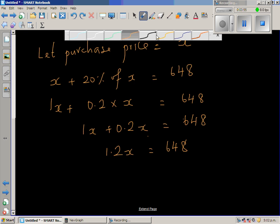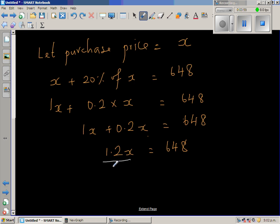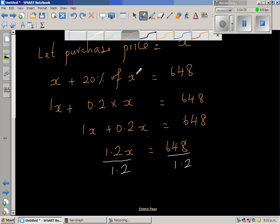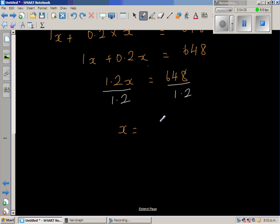So I'm going to divide both sides by 1.2. If I divide this side by 1.2, I have to divide this side by 1.2. So x equals 648 over 1.2.